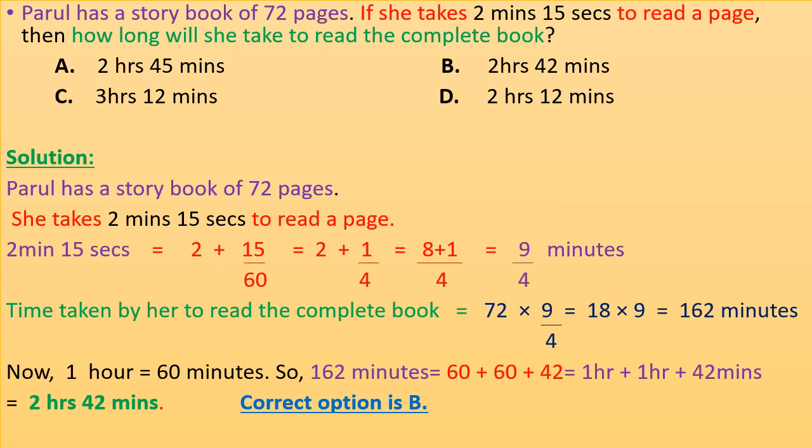We will convert 2 minutes 15 seconds to minutes. 2 minutes 15 seconds = 2 + 15/60 = 2 + 1/4 = (8+1)/4 = 9/4 minutes. Now time taken by her to read the complete book = 72 × 9/4 = 18 × 9 = 162 minutes.